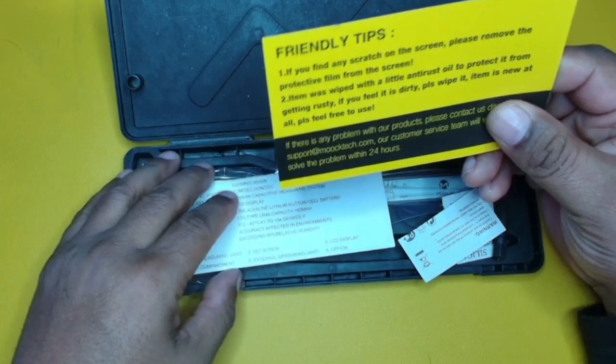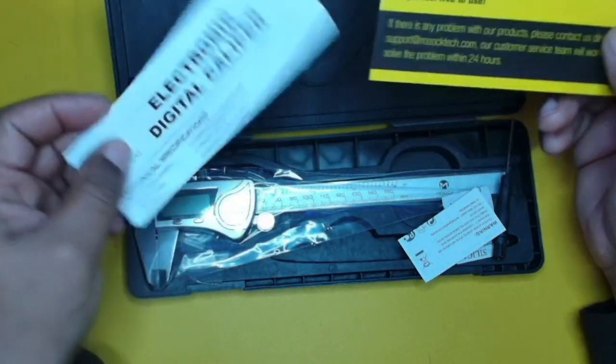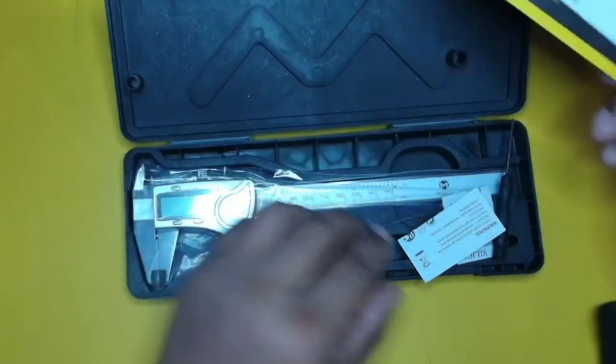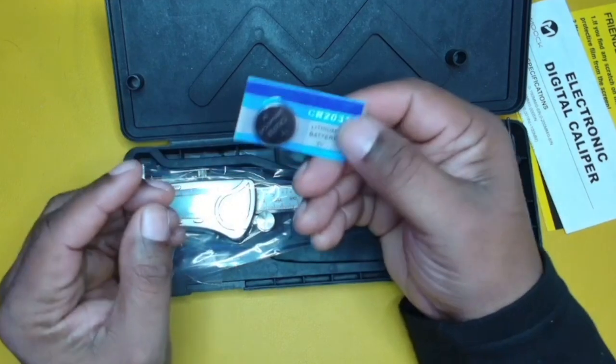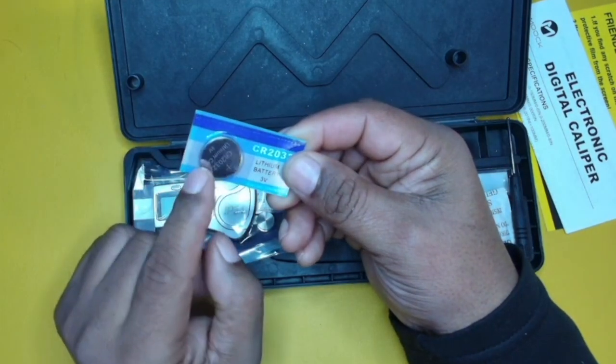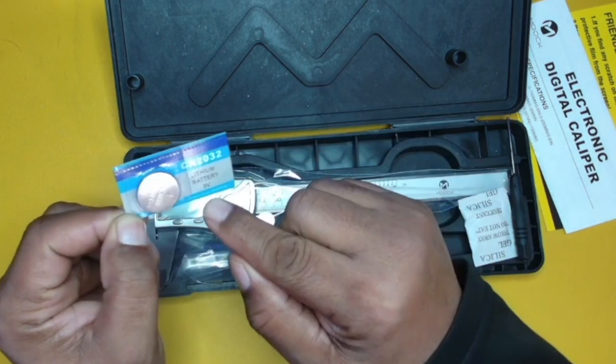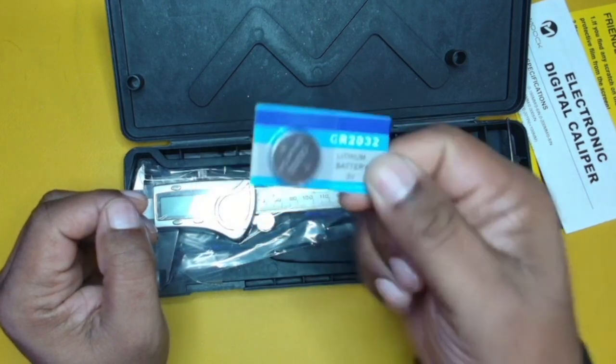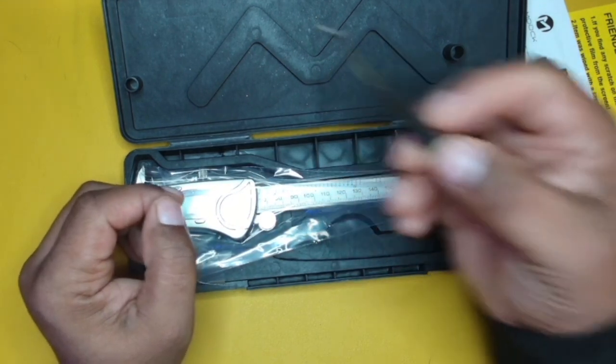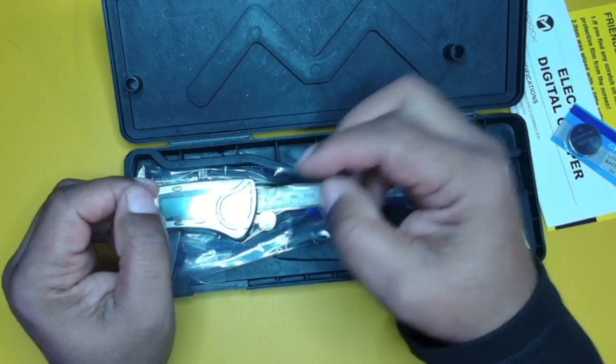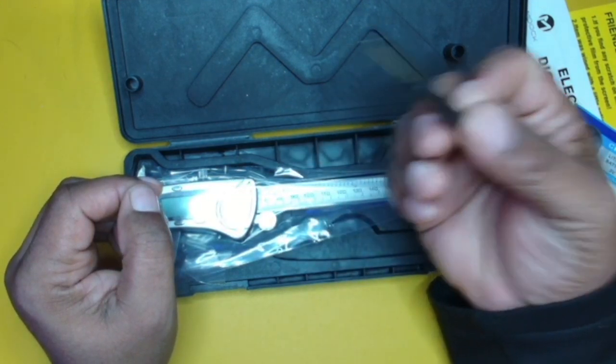The first thing we're greeted with is some friendly tips when using this. We get our manual that comes with it as well. We get what I believe to be a second or spare battery. This is just one of the little three-volt batteries that you would use for this device. And it also comes with a screwdriver because you actually have to unscrew this in order to switch out the battery.